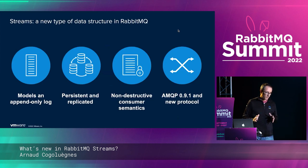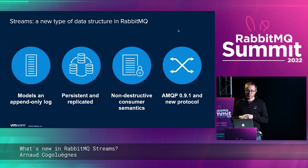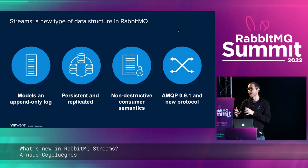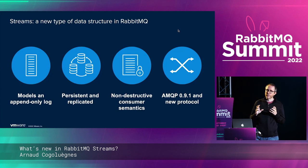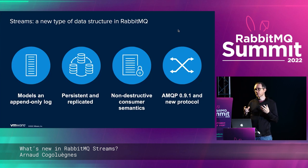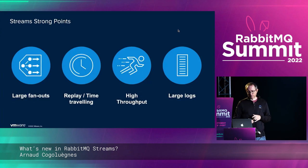We introduced streams in RabbitMQ 3.9, about a year ago. It's a new type of data structure — an append-only log — quite different in semantics from regular queues. A stream is always persistent and replicated, and it has non-destructive consumer semantics: you can read messages but you don't remove them from the stream. You can access streams with regular protocols like AMQP, STOMP, and MQTT, and we also created a brand new protocol just for streams.